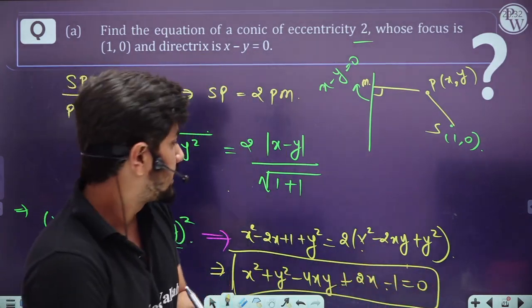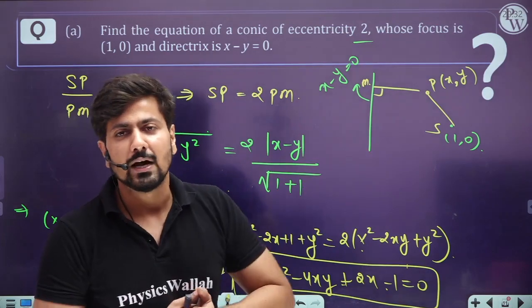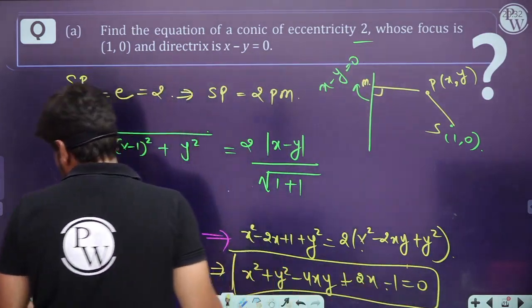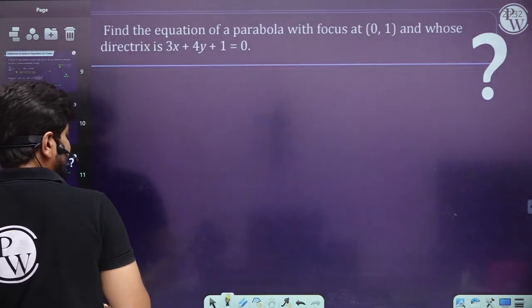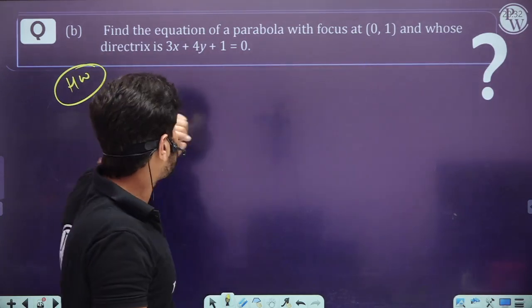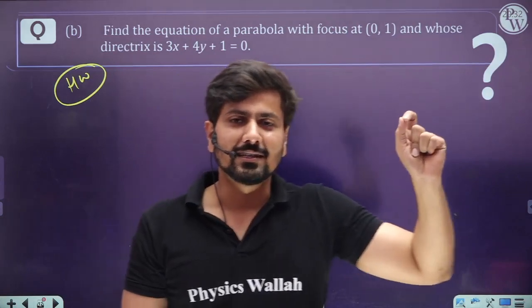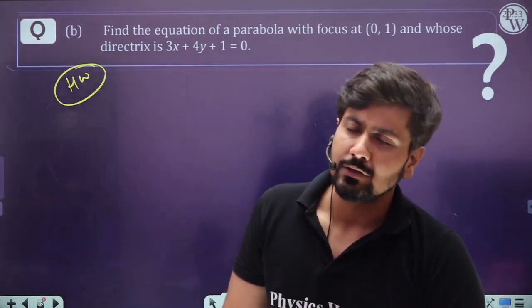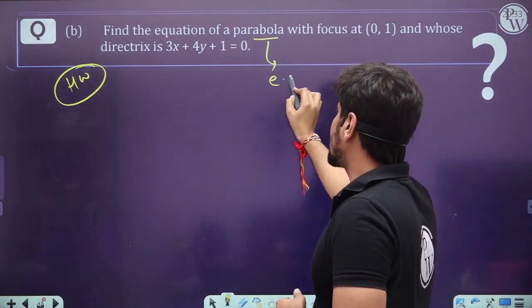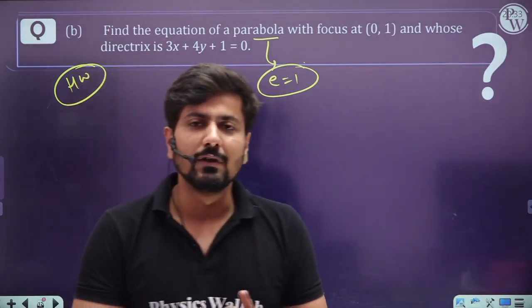If these three things — focus, directrix, and eccentricity — are given, we can easily find the equation of the conic. As homework: find the equation of a parabola with focus (0, 1) and a given directrix. Since it's a parabola, eccentricity = 1. Apply the conic condition and you will get the equation of that parabola.